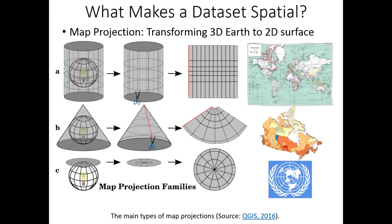The first component that makes a dataset spatial is the map projection, which defines how the Earth's 3D surface is transformed to a 2D representation. All projections distort features in some ways, with differing projections created to preserve certain characteristics such as distance, direction, angle, area, or shape. Projections can be thought of as a light source projecting features onto a 3D shape, which is then unfurled for a 2D view. The figure shows the three main projection families, which are cylindrical, conical, and planar.